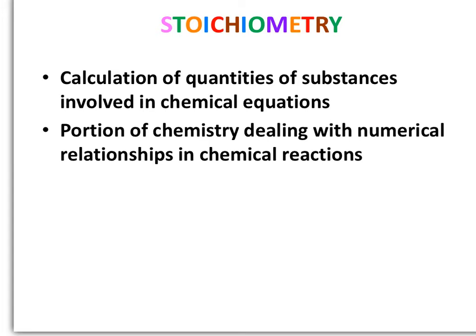There are two definitions for stoichiometry. First: the calculation of quantities of substances involved in chemical equations. Second: the portion of chemistry dealing with the numerical relationships in chemical reactions. The word 'stoic' literally means 'to count' in Latin, and you're going to be counting atoms when you talk about stoichiometry.